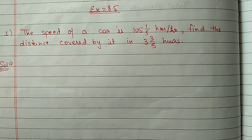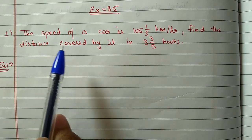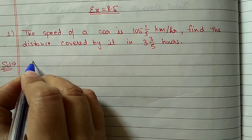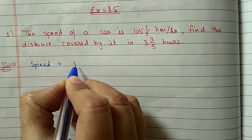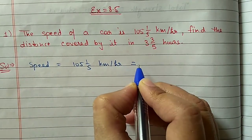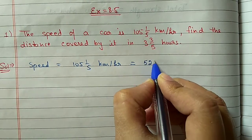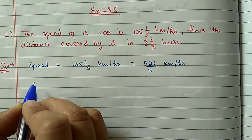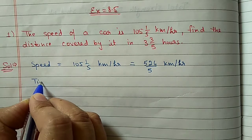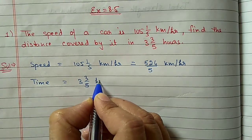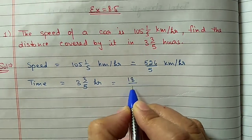Question 1: The speed of a car is 105 and 1/5 kilometer per hour. Find the distance covered by it in 3 and 3/5 hours. Speed is given as 105 and 1/5 km/hr, which you can change into an improper fraction to get 526 by 5 km/hr. Time is given as 3 and 3/5 hours, which you can write as 18 by 5 hours.